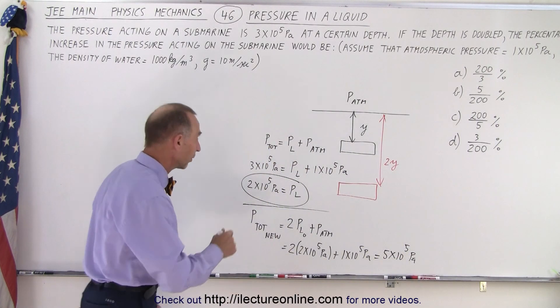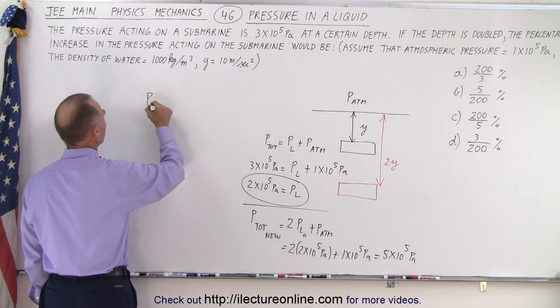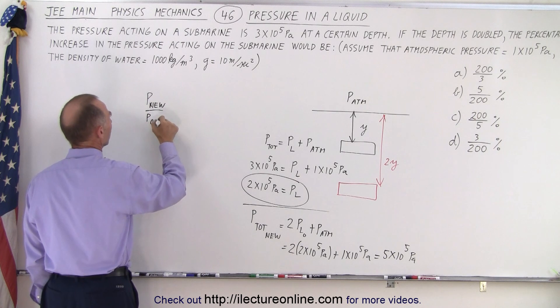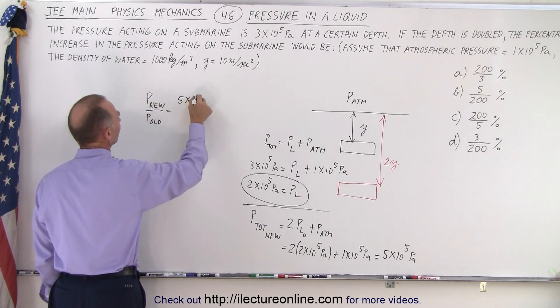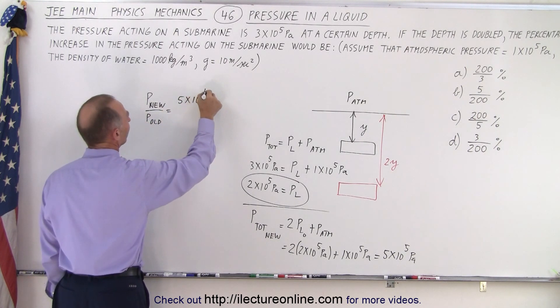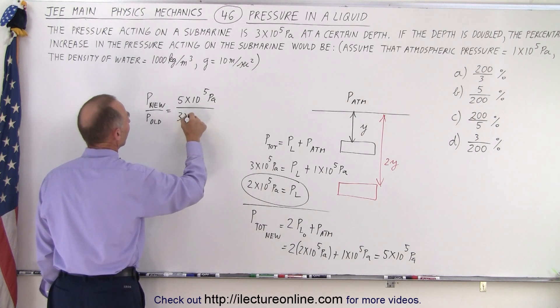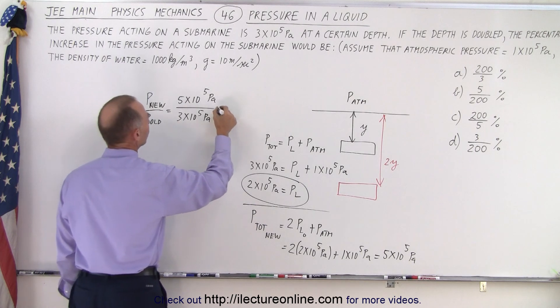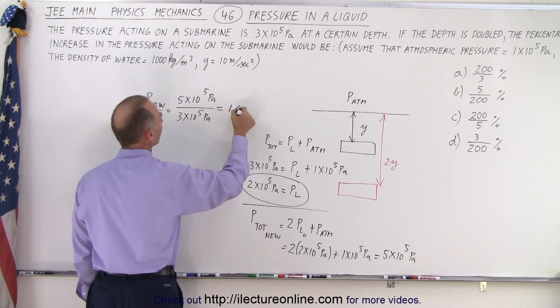Now when we compare it to the old pressure, pressure new divided by the pressure old is going to be 5 times 10 to the fifth pascal divided by 3 times 10 to the fifth pascal. And so that would be equal to 1.67.